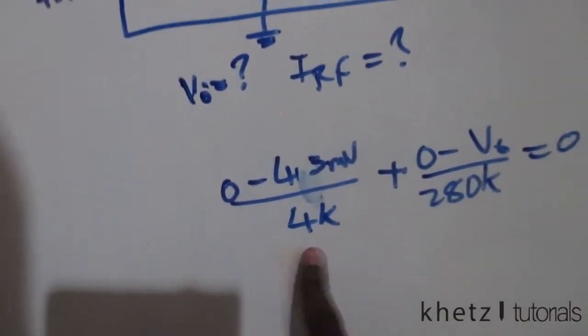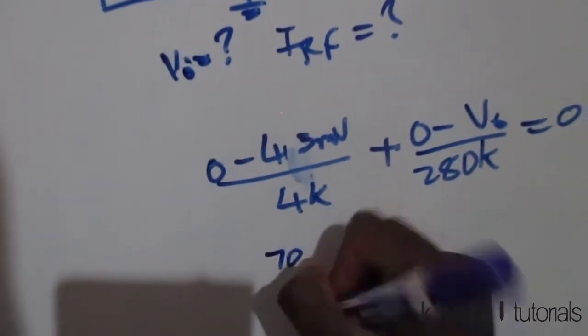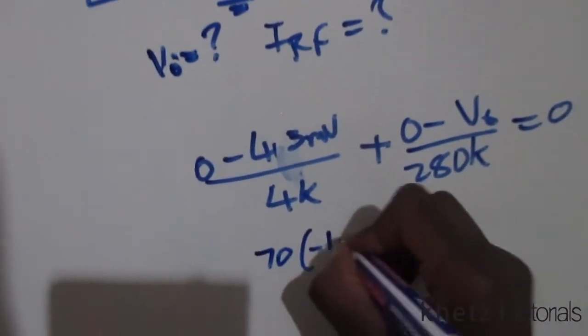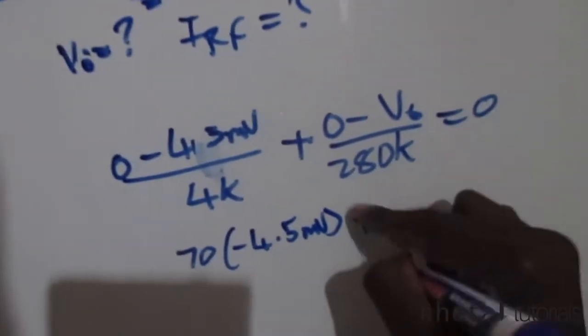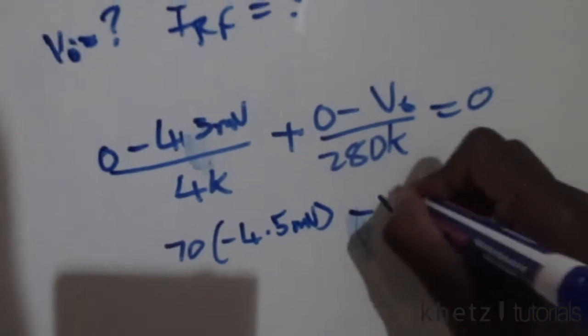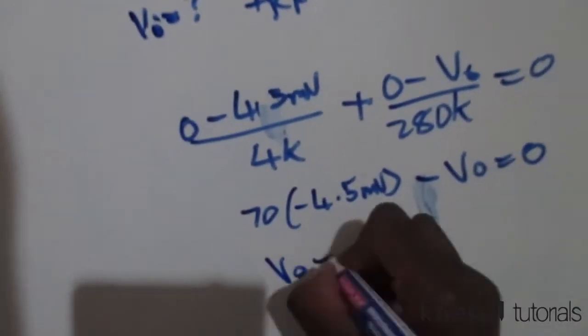We're going to have 70 multiplied by negative 4.5 millivolts plus, okay, this is going to be negative Vo equals zero. Therefore, Vo is equal to...